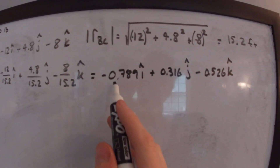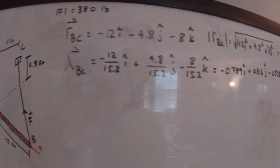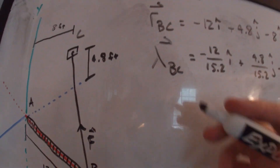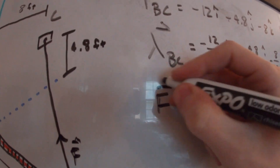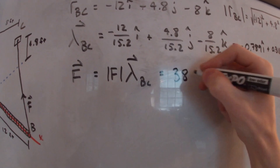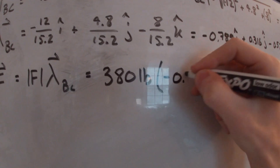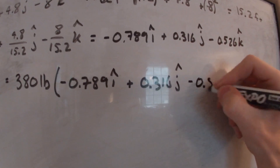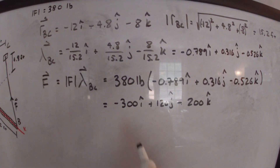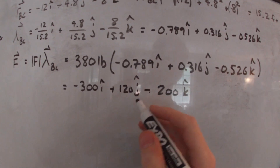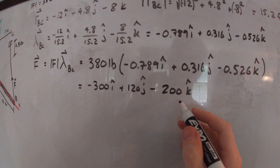As a check, we can verify the magnitude of this unit vector equals 1. We then find the components of F by multiplying the magnitude of F (380 pounds) times the unit vector: 380 times (−0.789i + 0.316j − 0.526k). Evaluating that, we get F = −300i + 120j − 200k pounds.